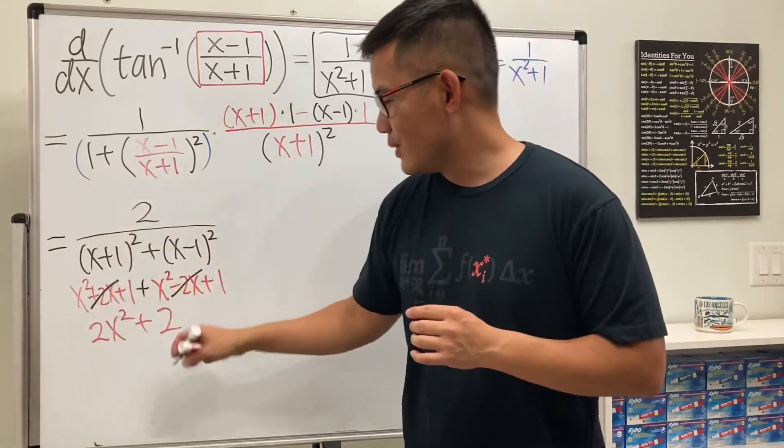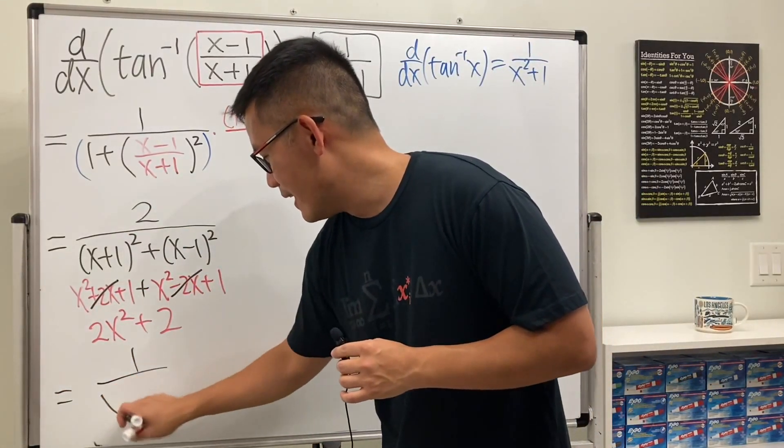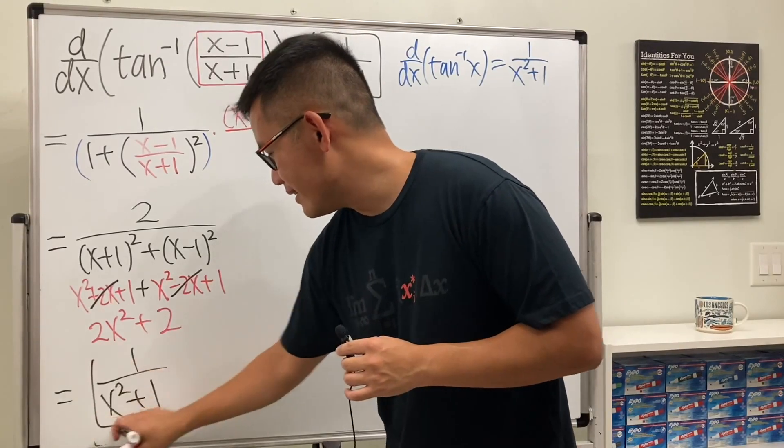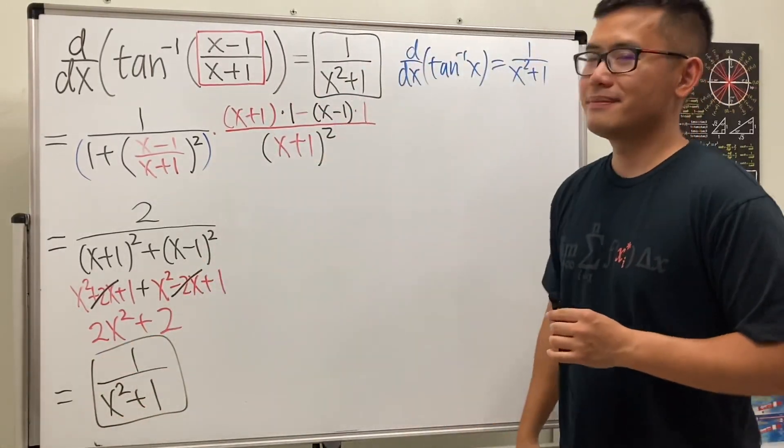And then 2, 2, 2, so we can reduce that, we'll just get 1 over x squared plus 1, and then, yep, we are done. Cool, huh?